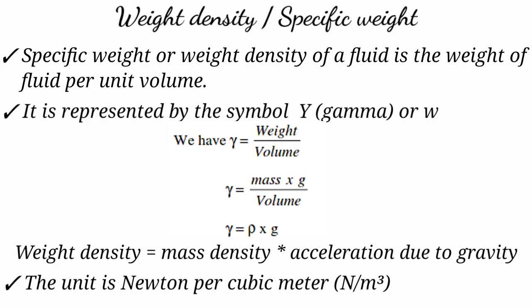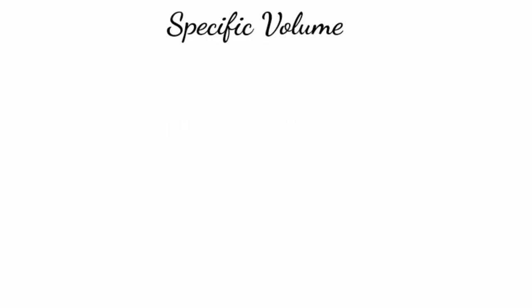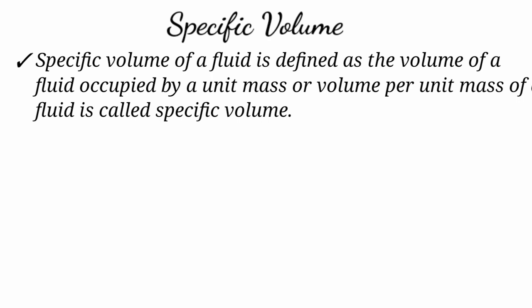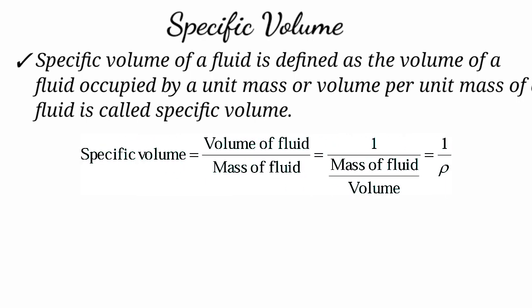Therefore, gamma (γ) = ρ × g, where ρ is the mass density and g is the acceleration due to gravity.